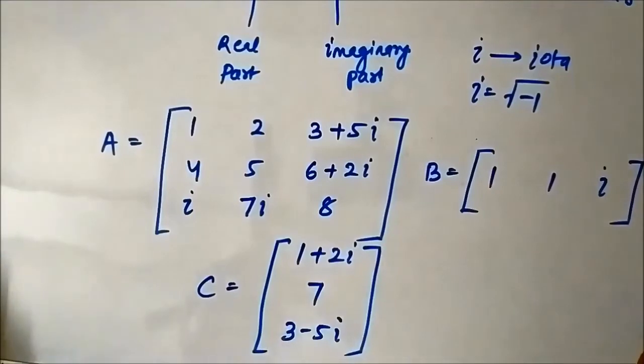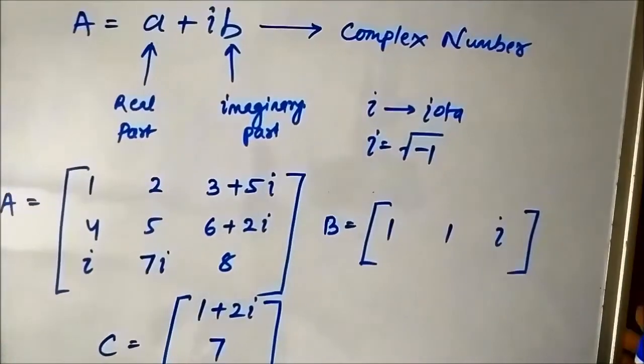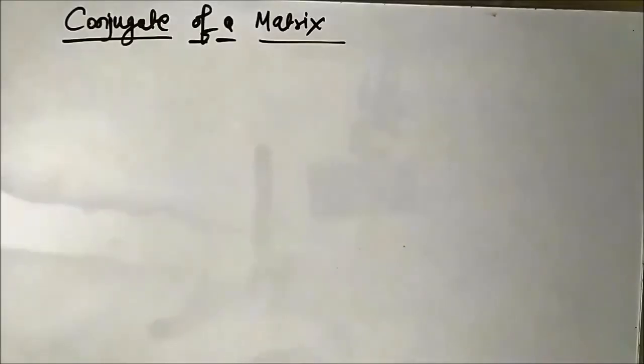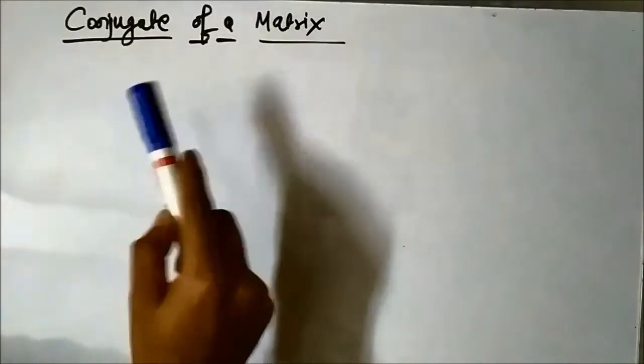So the complex matrix consists of complex numbers. Even if there is one complex number, it becomes a complex matrix. The next thing which we are going to discuss about is the conjugate of a matrix. Before we go directly to the conjugate of a matrix, first let us understand what is a conjugate.